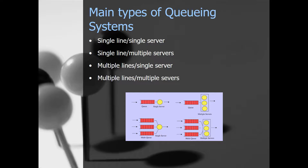We have four main types of queuing systems. The first one is single line single server, kind of like a drive-through at McDonald's. You also have single line multiple servers, such as at a bank — one line of people with multiple tellers who call the next person over. Then there's multiple lines and single server, like an apartment maintenance worker — one person doing the work but several people waiting. And finally, multiple lines and multiple servers, like at a movie theater.